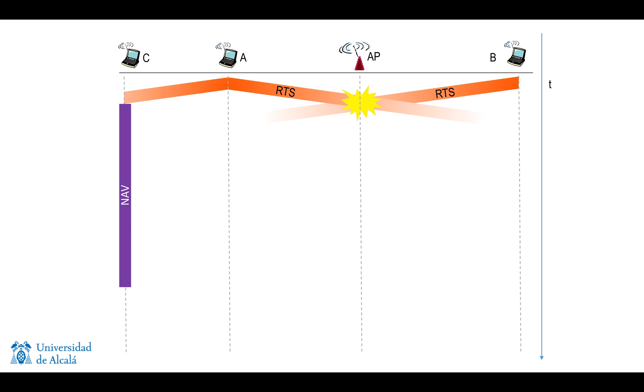In theory, if either A or B had been successful with the RTS, the access point would have waited for a short time called SIFS, and then sent a clear to send frame, a CTS. The goal of this CTS frame is to confirm the possibility for transmission. In this particular case, since there has been a collision, the access point doesn't receive any request to send correctly, so there is no clear to send.